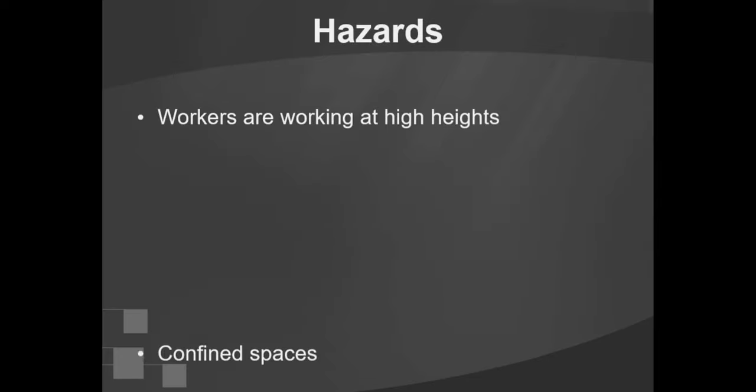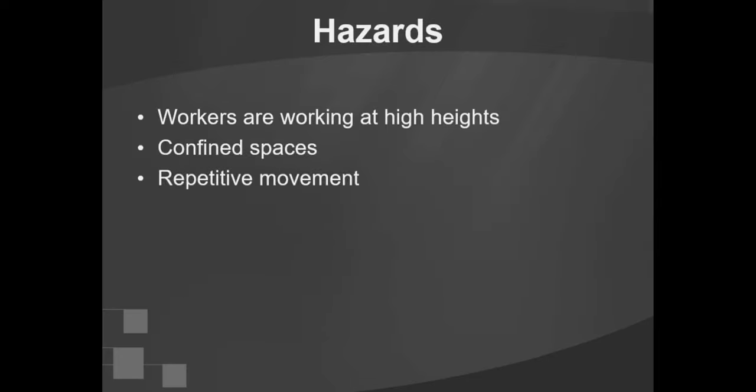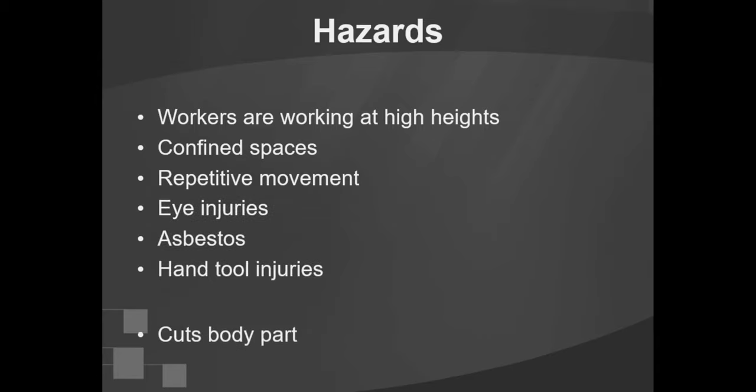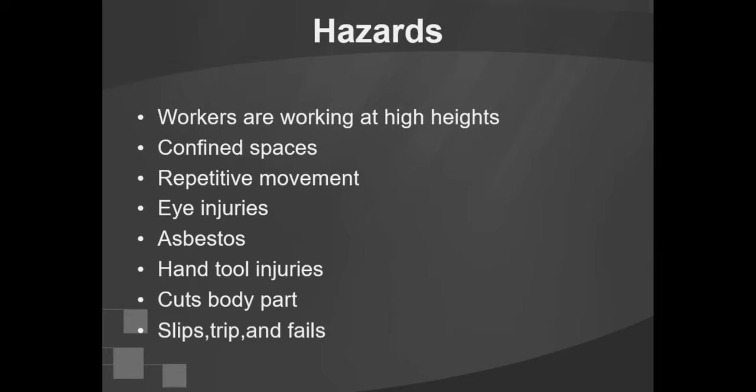Hazards in plumbing work include: workers working at high heights, confined spaces, repetitive movement, eye injuries, asbestos exposure, hand tool injuries, cuts to body parts, and slips, trips, and falls.